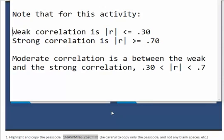So in terms of a weak correlation, that's any time where the absolute value of Pearson's R is less than or equal to 0.3. A strong correlation is where the absolute value of Pearson's R is greater than or equal to 0.7, and the absolute value simply means ignore the sign.